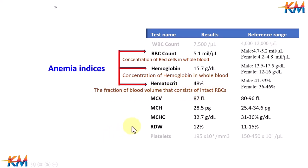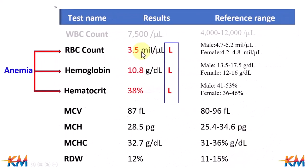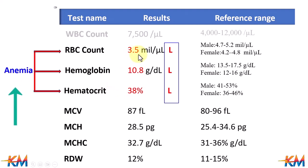Then compare results in the CBC report with the reference range for the three parameters. If the three parameters, or one of them, is decreased, then anemia is present. The decreased result is shown in red color with the letter L beside it, which is an abbreviation of low.